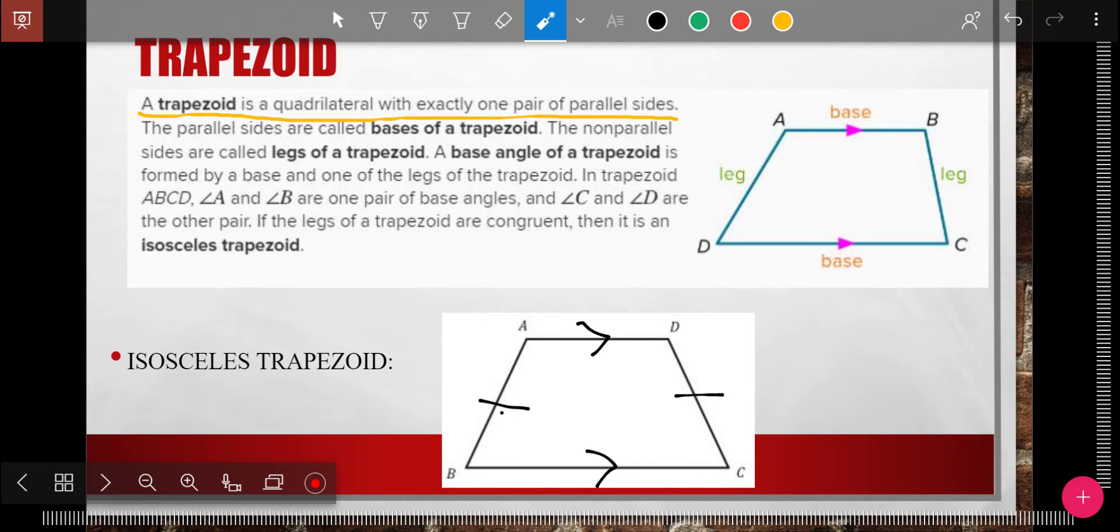Again, those arrows being parallel. So the non-parallel sides we call legs. The bases are the parallel sides, the non-parallel sides are legs. And so that is a trapezoid.